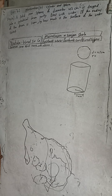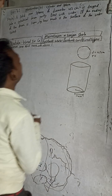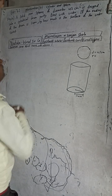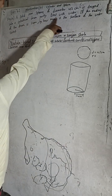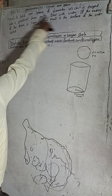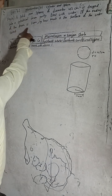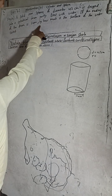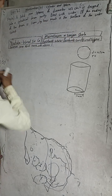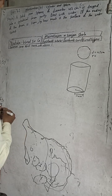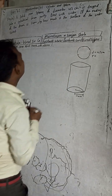Now I will start this solution. A solid iron sphere of diameter 42 cm is dropped into a cylindrical drum partially filled with water. If the radius of the drum is 1.4 meters, by how much is the surface of water raised?